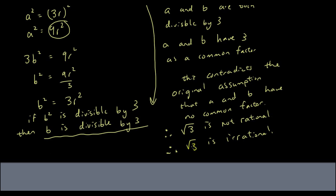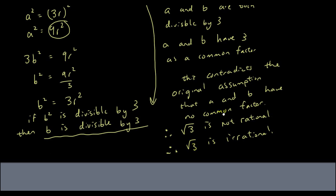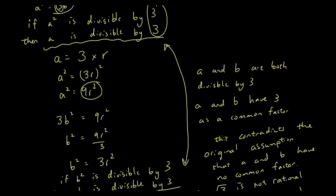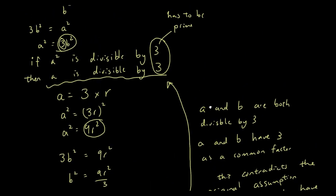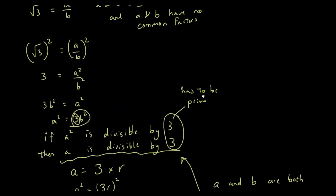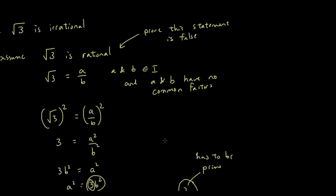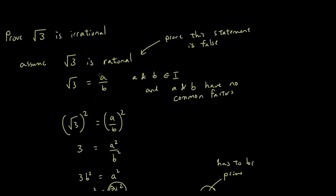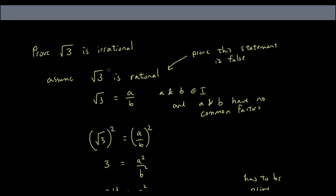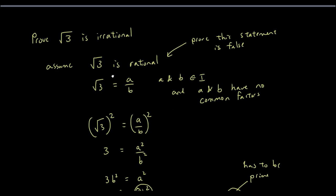Therefore, square root of 3 is not rational — square root of 3 is irrational. Use the therefore sign just in case your teacher wants that. We originally stated the assumption and we've just proven it false, so we can conclude square root of 3 is irrational. Hopefully this helps. You can now use this same working to prove that the square root of any prime number is irrational.